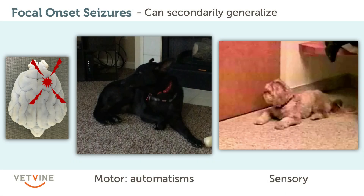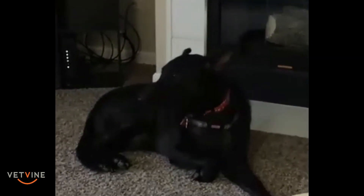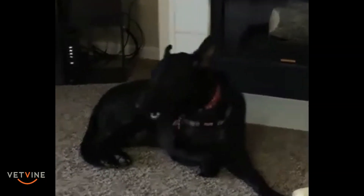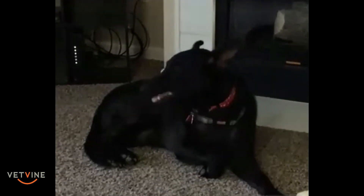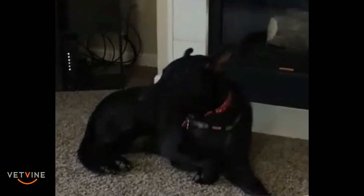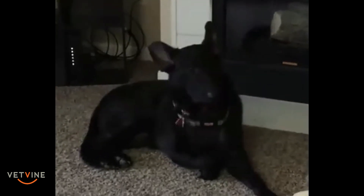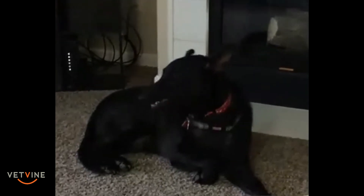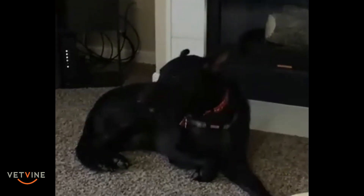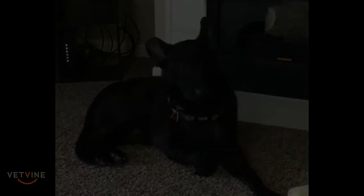Here are a couple of examples of focal seizures. This animal is having focal seizures involving motor function. It had generalized seizures as well but also had these focal onset seizures, which are very brief and just involve some lip smacking and some movement around the chewing muscles and the facial muscles.